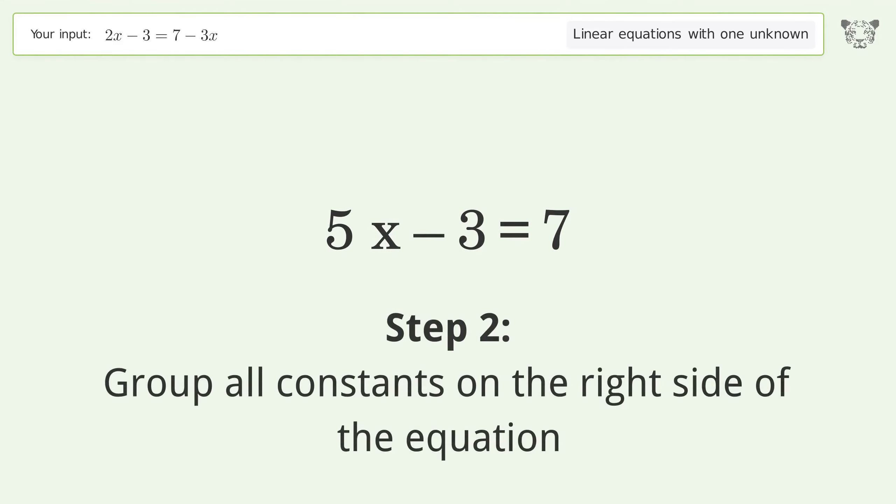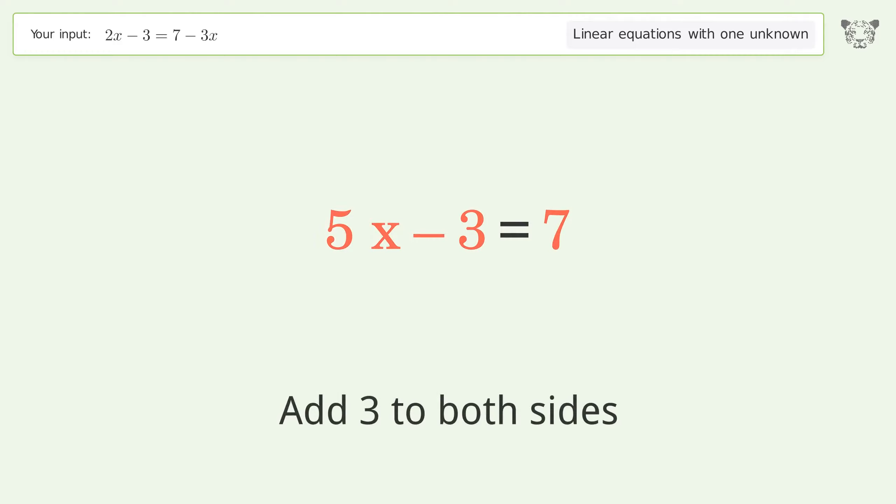Step 2: Group all constants on the right side of the equation. Add 3 to both sides, simplify the arithmetic.